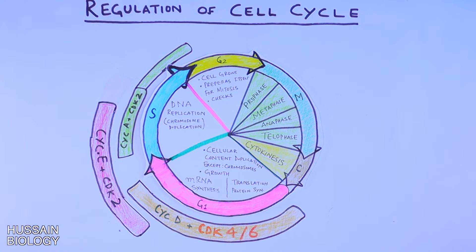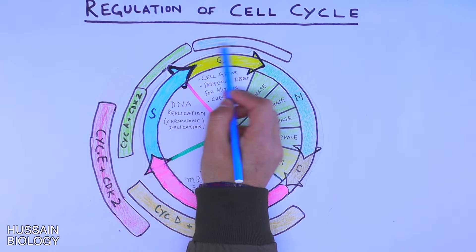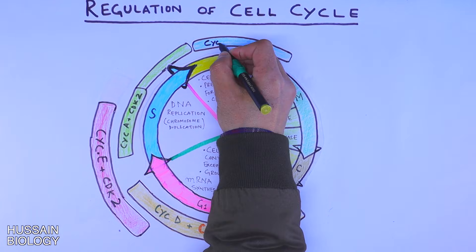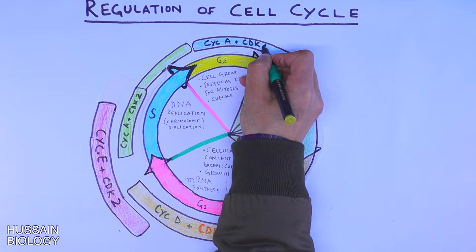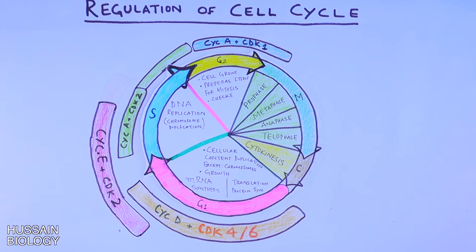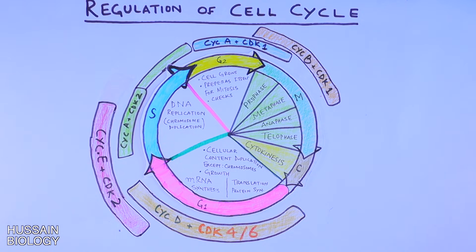The same cyclin A also interacts with CDK1, and this interaction exists in G2 phase and in the initial stages of M phase. Finally, cyclin B interacts with CDK1, and this interaction is found in the late G2 phase and in the M phase, as shown in the diagram.